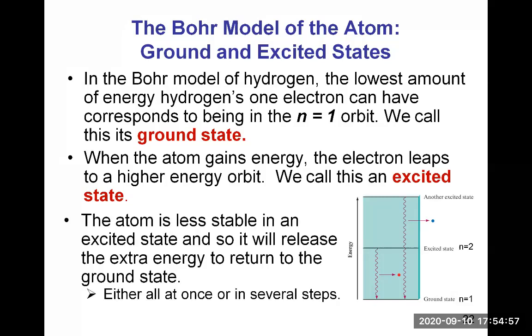The atom is less stable in an excited state, and so it will release the extra energy to return to the ground state. The red wavy lines here are representing the electron when it's releasing the energy and going back to the ground state from excited state n equals two. You can see that a photon is emitted, the energy is released in the shape of a photon of a specific color, for example, red.